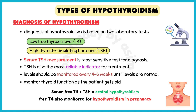It is important to monitor thyroid function as the patient gets older because a dose reduction can be required. Too high a dose of thyroid hormone replacement in elderly patients can cause atrial fibrillation and fractures. Serum FT4 is monitored in addition to TSH in central hypothyroidism, which is a defect in pituitary production of TSH. FT4 is also monitored when treating hypothyroidism in pregnancy.